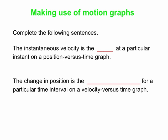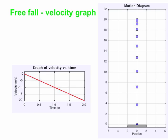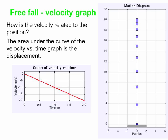Now we're going to look at connections between velocity and position. The instantaneous velocity is the slope at a particular instant on a position versus time graph. And if you have a velocity versus time graph, you can get the change in position — it's the area under the curve for a particular time interval on a velocity versus time graph. Let's see how that works in this case.